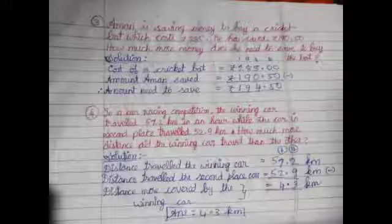Fourth one is: in a car race competition, the winner car traveled 57.2 km per hour while a car in the second place traveled 52.9 km. How much more distance did the winning car travel than the other? Distance traveled by the winning car is 57.2 km and distance traveled by the second place car is 52.9 km. Do the subtraction. The distance more covered by the winning car is 4.3 km.